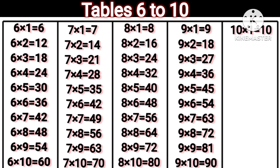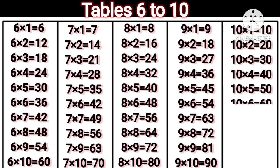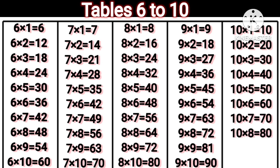10 1s are 10. 10 2s are 20. 10 3s are 30. 10 4s are 40. 10 5s are 50. 10 6s are 60. 10 7s are 70. 10 8s are 80. 10 9s are 90. 10 10s are 100.